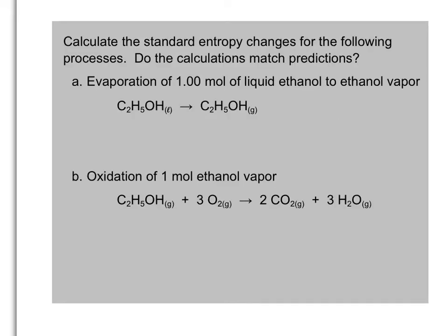We're going to look at two systems. First, we're going to use our prediction guidelines to determine if the change in entropy is going to be positive or negative. If the change in entropy is positive, that means entropy increases as the process moves forward. If the change in entropy is negative, that means the entropy decreases as the process moves forward.